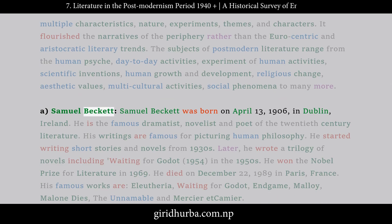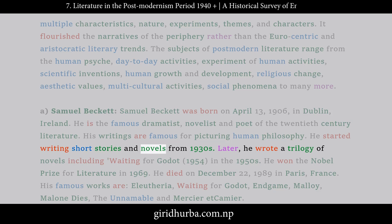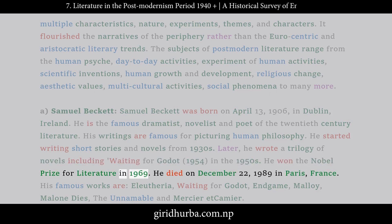A. Samuel Beckett was born on April 13, 1906, in Dublin, Ireland. He is the famous dramatist, novelist, and poet of the 20th century literature. His writings are famous for picturing human philosophy. He started writing short stories and novels from the 1930s. Later, he wrote a trilogy of novels including Waiting for Godot (1954) in the 1950s. He won the Nobel Prize for Literature in 1969. He died on December 22, 1989, in Paris, France.